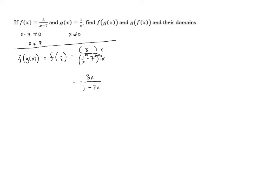Now let's take a look at the domain. For this composition of functions, we start with x, then g takes x as an input and gives 1 over x as an output. Then f takes 1 over x as an input and gives us 3x over 1 minus 7x as an output. We need to look at the domains of each of these — g and f — and make sure we don't have an x value that causes these functions to be undefined. For g of x, we know that x can't be 0. That's because if we plug in 0 for x and evaluate g of 0, we get 1 over 0, which is undefined.